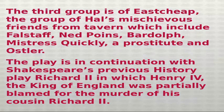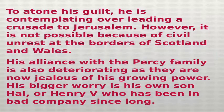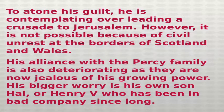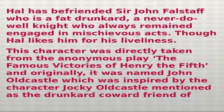The play is in continuation with Shakespeare's previous history play Richard II, in which Henry IV was partially blamed for the murder of his cousin Richard II. To atone his guilt, he is contemplating leading a crusade to Jerusalem. However, it is not possible because of civil unrest at the borders of Scotland and Wales. His alliance with the Percy family is also deteriorating as they are now jealous of his growing power. His bigger worry is his own son Hal, or Henry V, who has been in bad company for a long time.